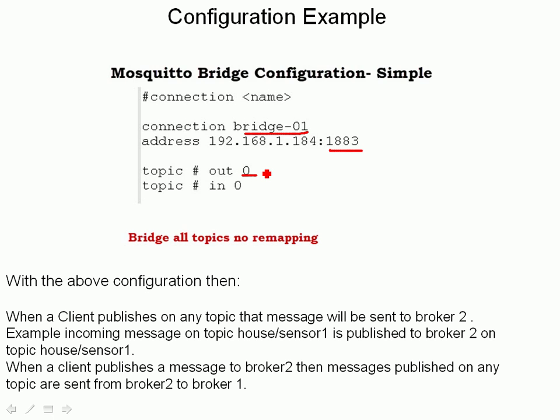I've got no remote prefix and no local prefix, which is why those areas are blank — you'll see what happens when I do topic remapping in a moment. On the inbound side, I'm again bridging all topics with QoS 0. So 'out' means out of broker 1, and 'in' means into broker 1 from broker 2. There's no entry on broker 2; broker 2 is configured as a standard broker.